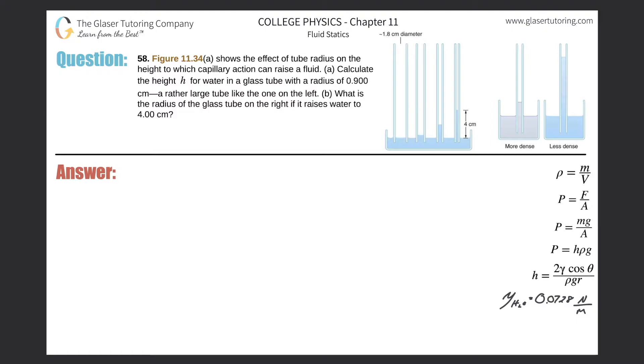Number 58, figure 11.34a shows the effect of tube radius on the height to which capillary action can raise a fluid. Letter A, calculate the height h for water in a glass tube with a radius of 0.9 centimeters, a rather large tube like the one on the left.